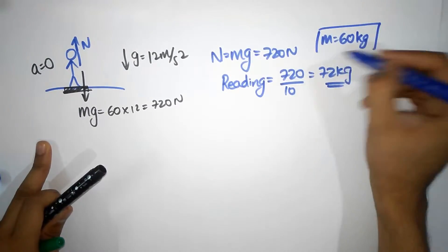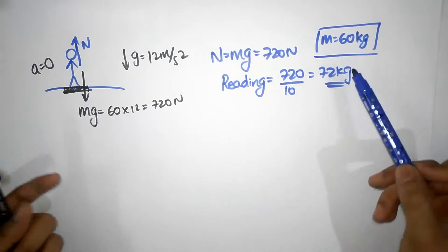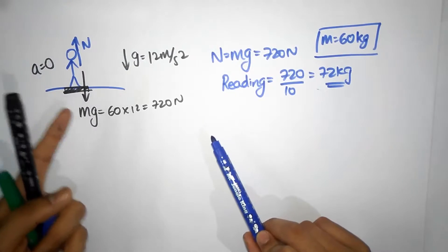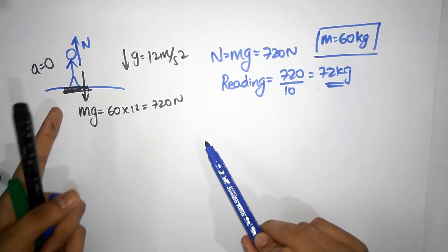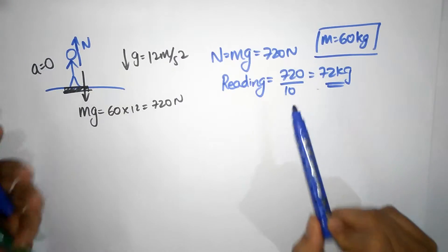You know that, so you are a smart chap. Of course, what you would now say is, the reason why my scale is giving me a reading of 72 kilograms is because my scale does not know that I'm on a different planet. I took the scale from Earth, and so the poor scale is still dividing by 10.